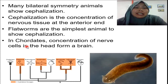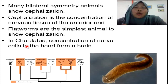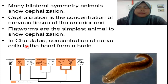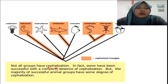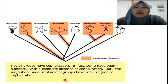To summarize, not all chordates have a vertebral column. This picture again shows that not all phyla of the animal kingdom show cephalization. In fact, some have been successful with a complete absence of cephalization, meaning even without concentrated nerve tissue, they still can live and survive.